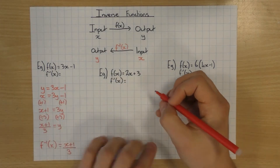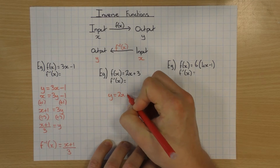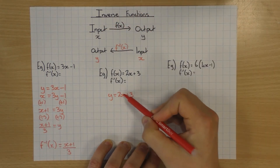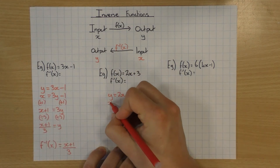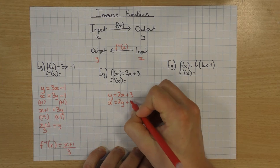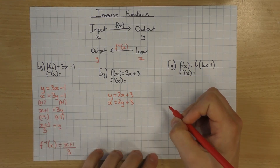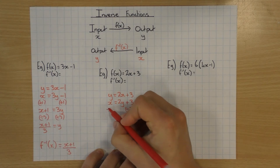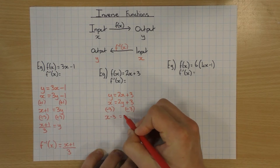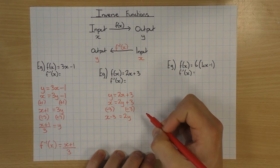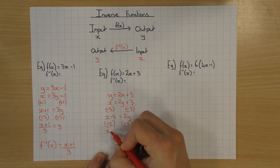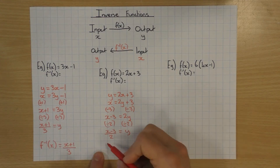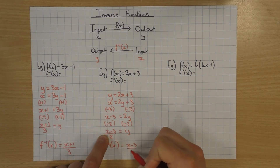Let's have a go at the next one. Same process: set it equal to y, because if I input x I get output y. Since I want the inverse function, I swap the x and the y around. So x equals 2y plus 3. Then rearrange to make y the subject — subtract 3 from both sides to get x minus 3 equals 2y, then divide by 2. So x minus 3 divided by 2 equals y. Don't forget to write the inverse function: f⁻¹(x) equals x minus 3 over 2.